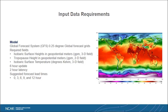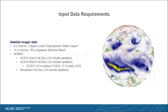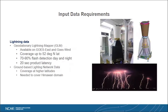For the imager data, we have the two channels Ken talked about: the 6.2 micron and 11.2 micron channels. For ROMEO, we used GOES East, GOES West — noting that GOES West is being replaced in early 2023 due to cooling system issues with the original GOES-17 — and Himawari. These are all full-disk scans updated every 10 minutes.